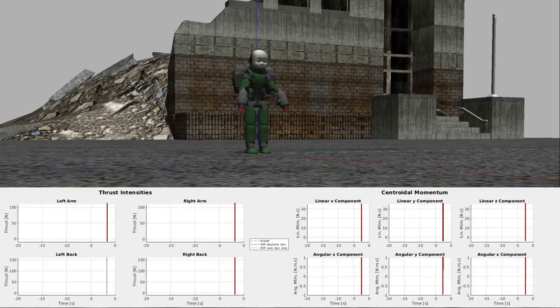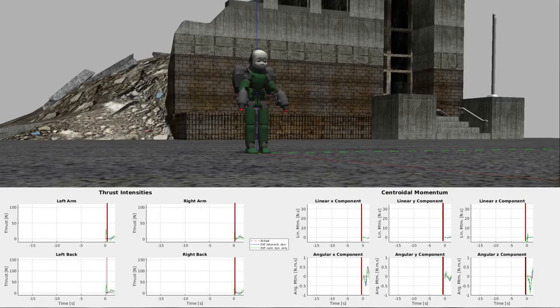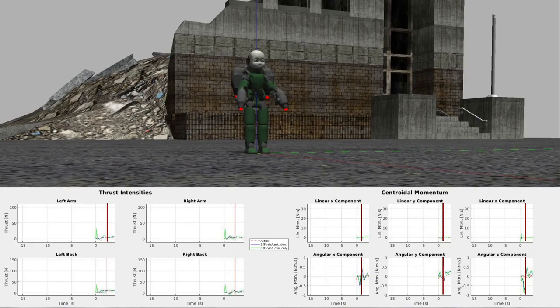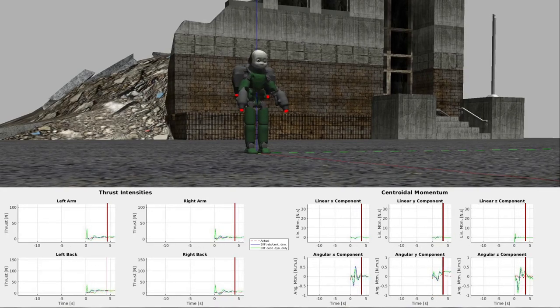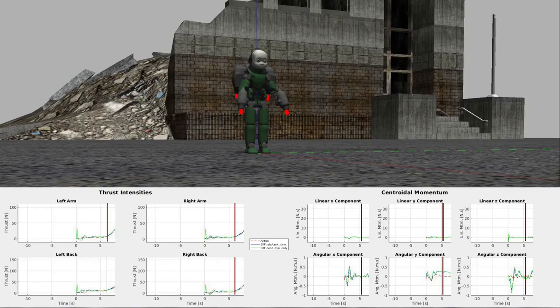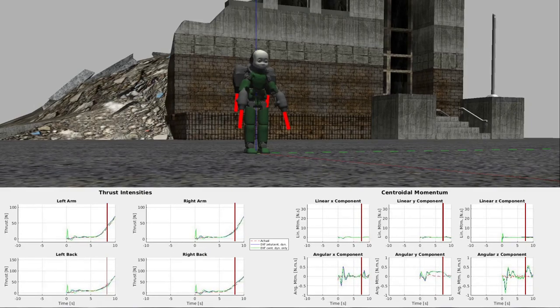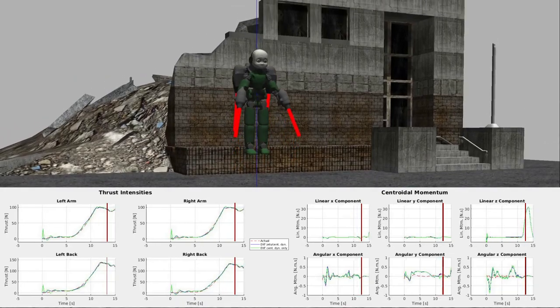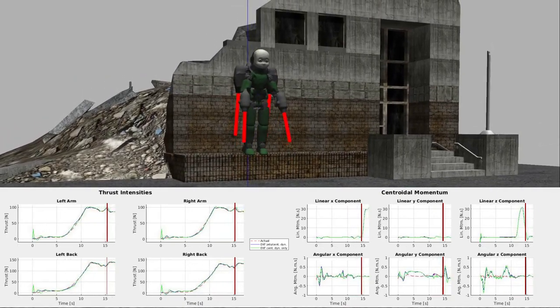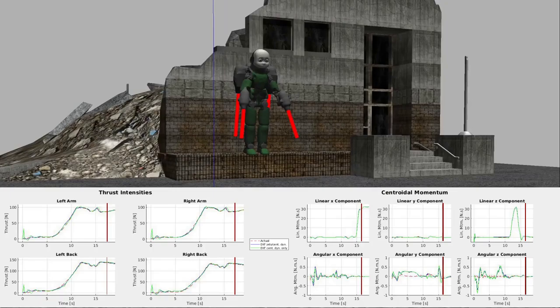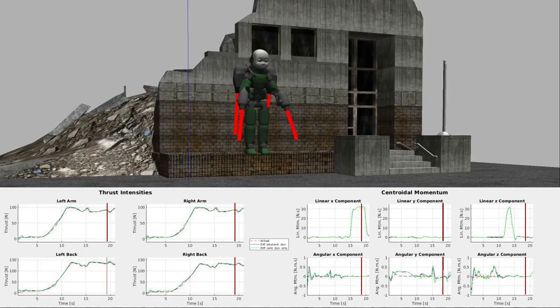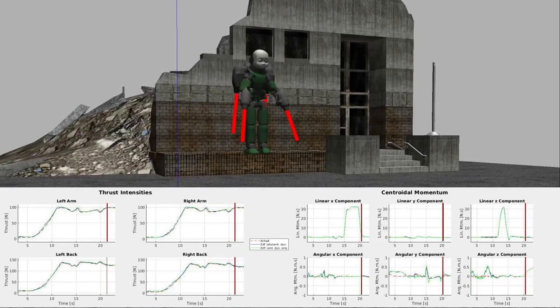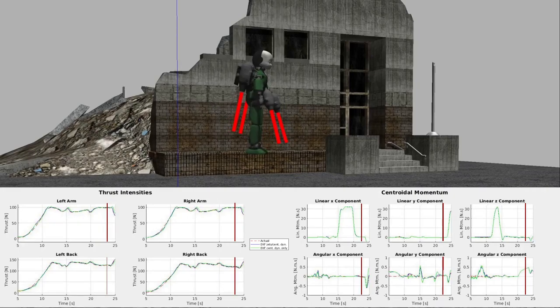The estimator is validated in a simulated flight scenario using Gazebo. The plots on the bottom left show individual thrust intensities estimated by two estimators' variations. The first is the estimator we propose, and the other is a variation of it that discards the jet's dynamics and depends only on the robot's centroidal momentum dynamics. We can see that both estimators converge to the simulated thrust intensities.